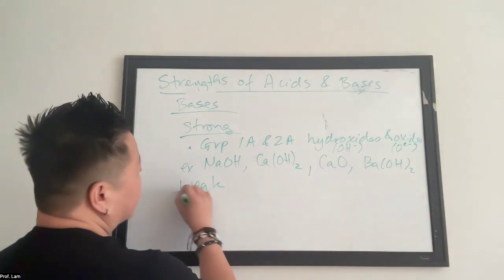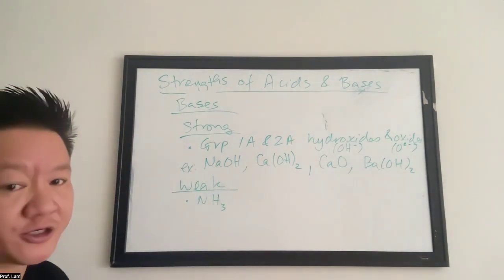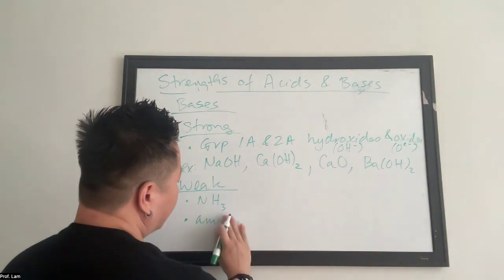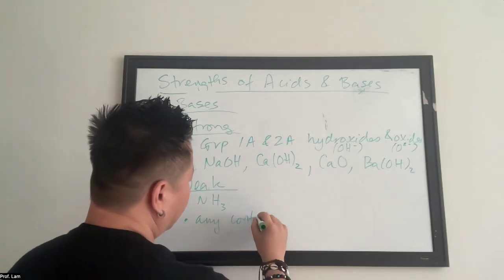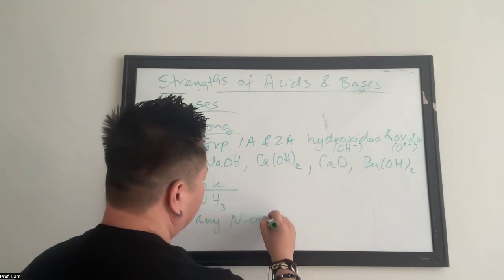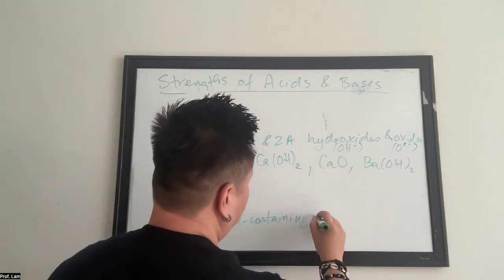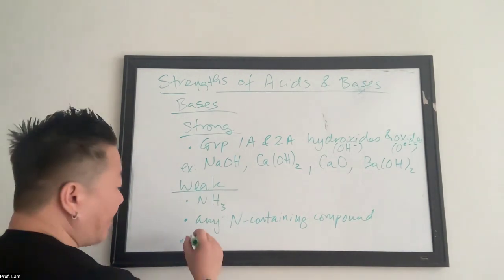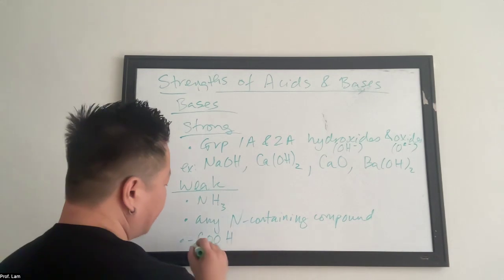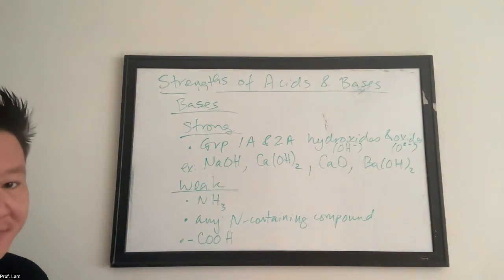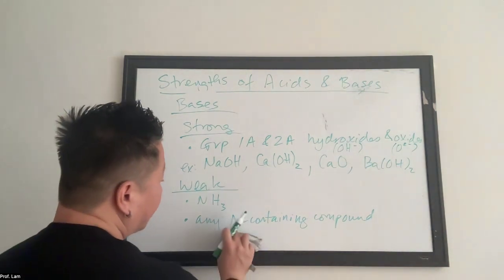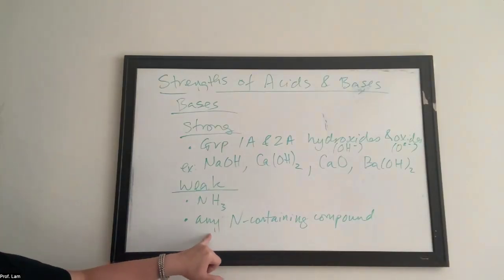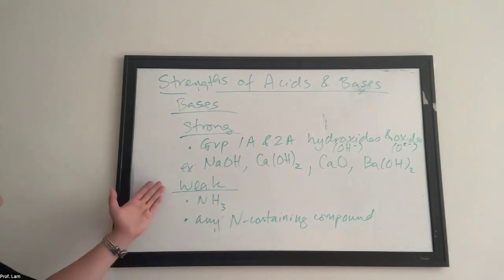Weak bases. We saw one ammonia and that one shows up a lot. And so that's why I write it out. But really, generally, anything containing nitrogen. That's it. That's all you need to remember. Very easy. You got ammonia. You got any nitrogen containing compound. It's going to be a weak base.